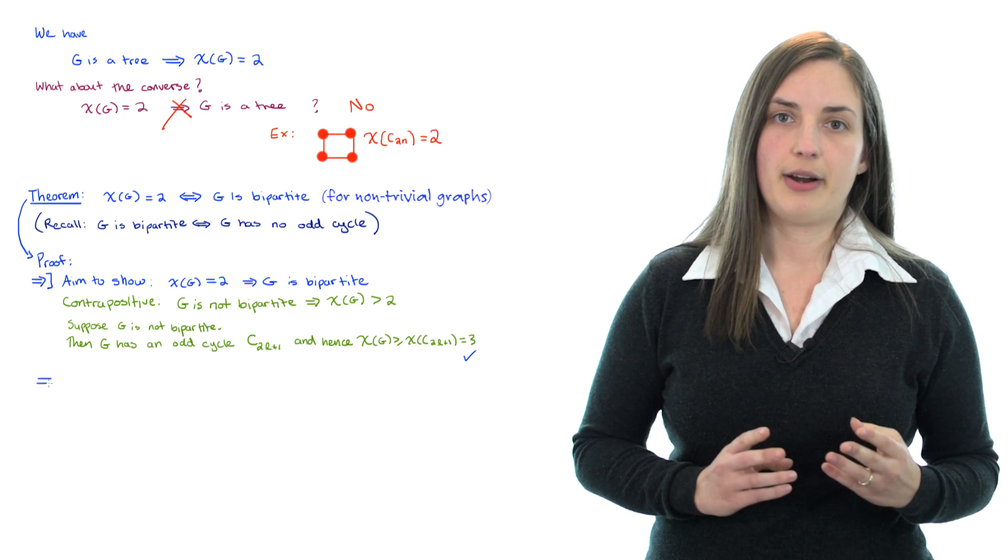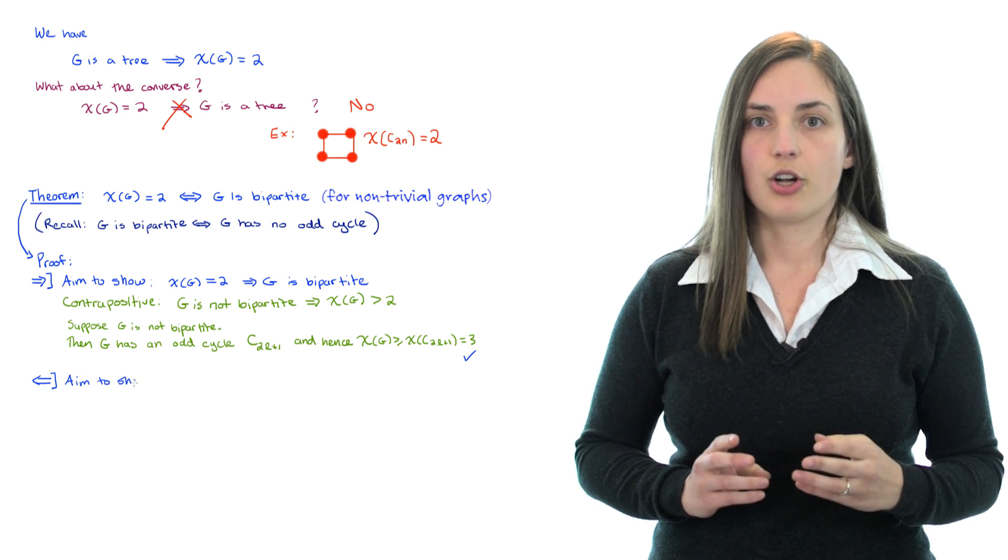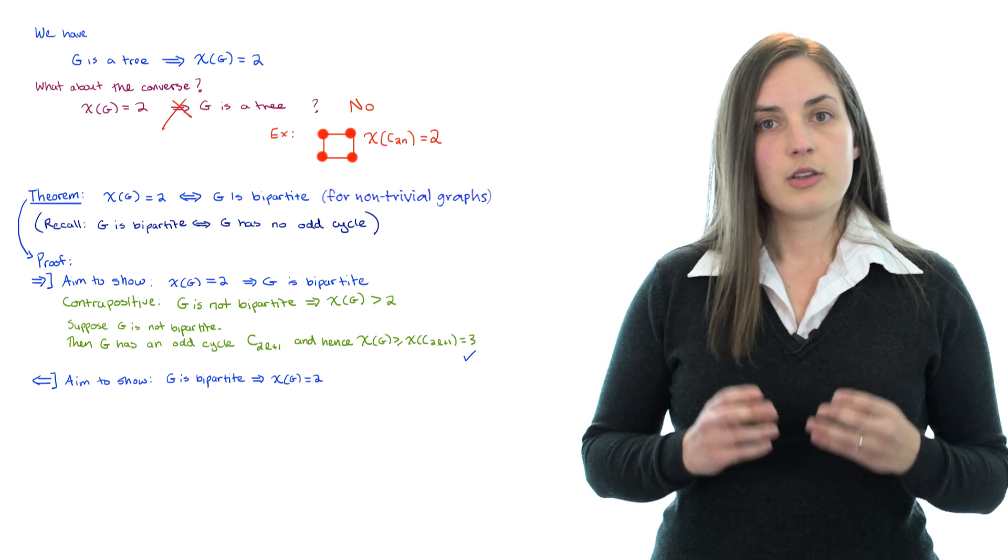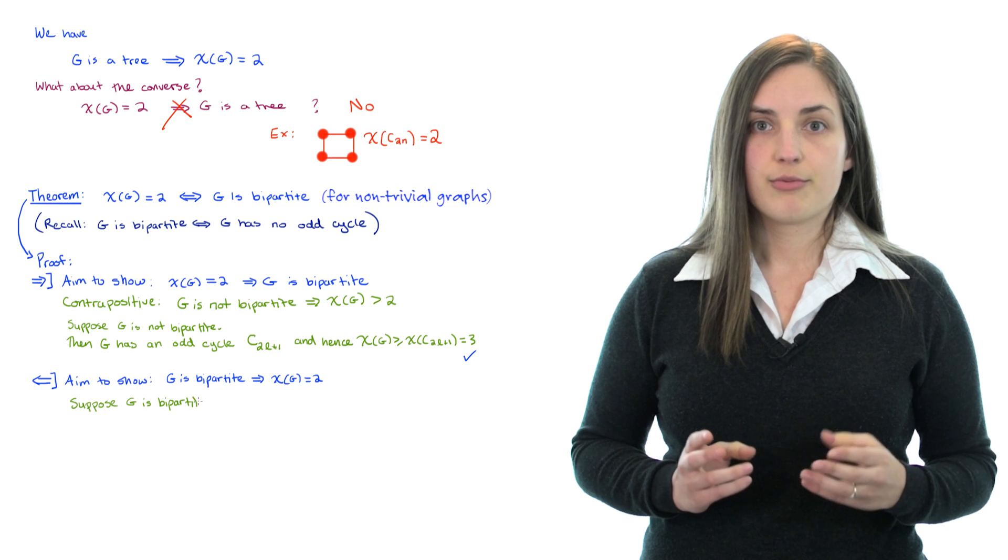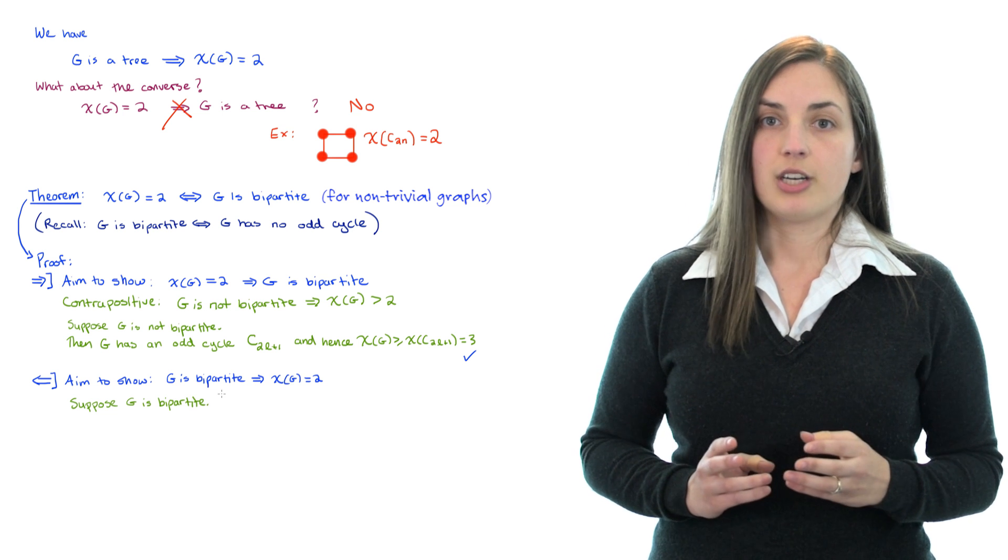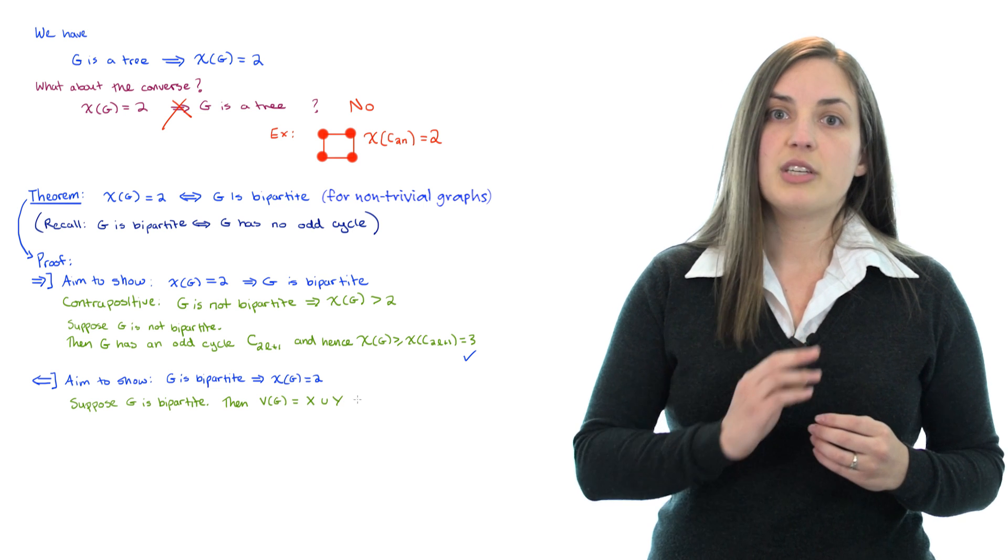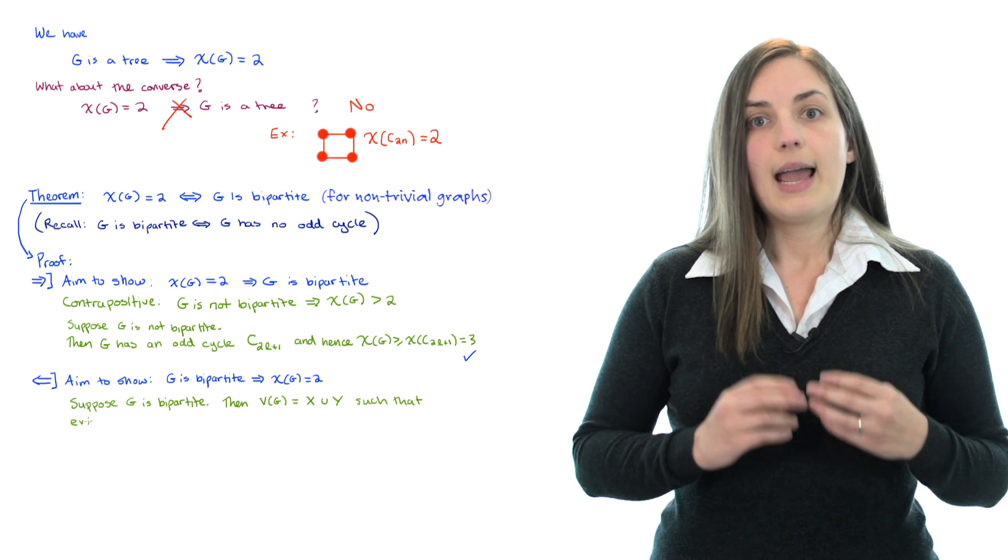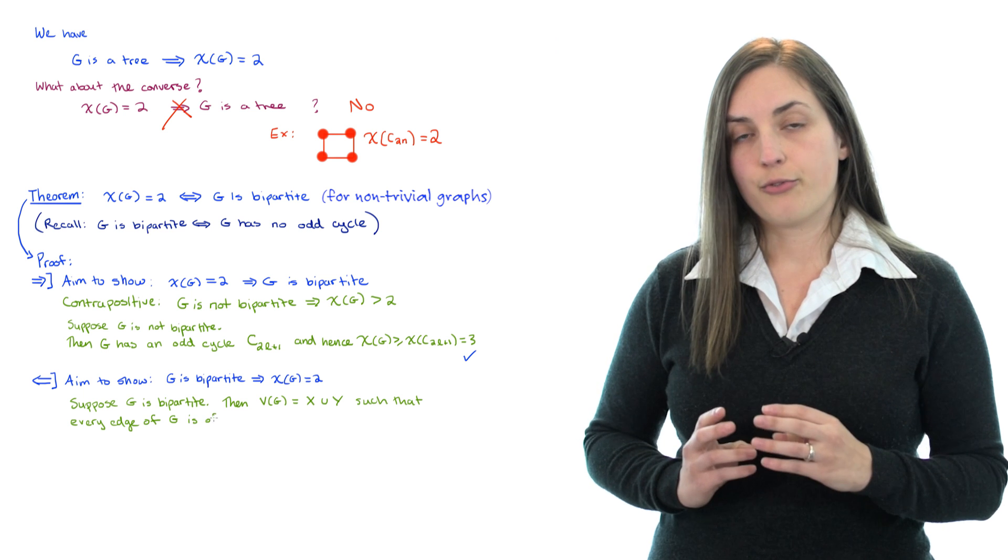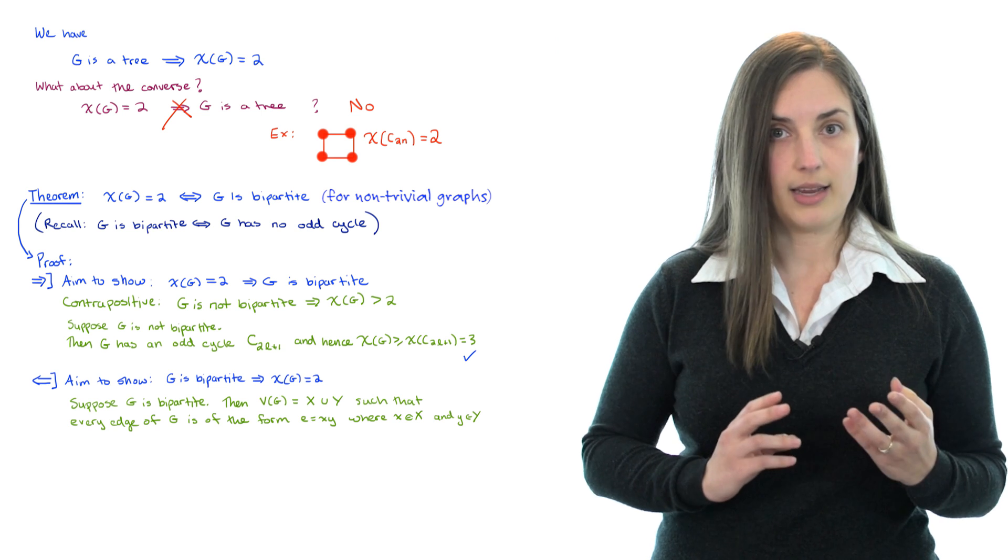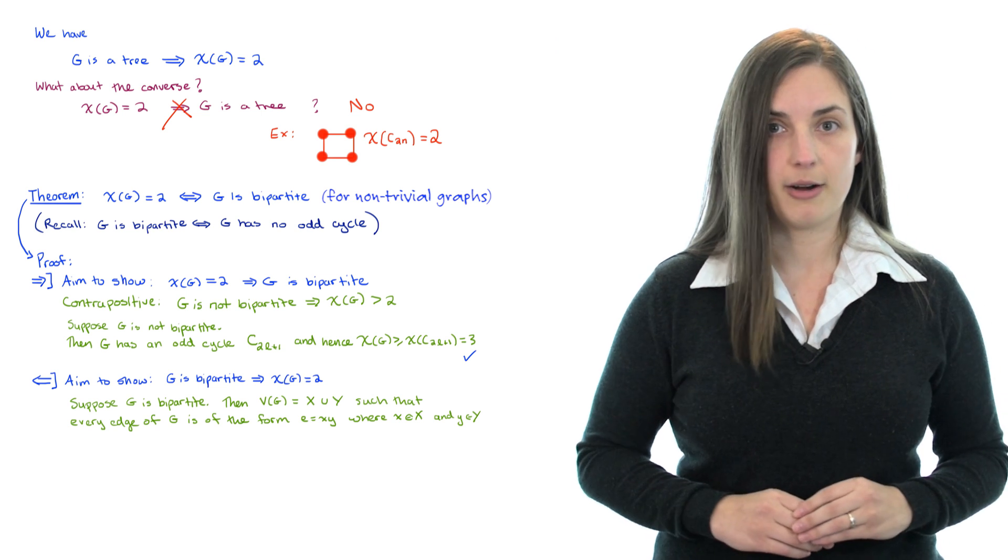Now let's look at the other direction. Here we aim to show that if a graph is bipartite, then the chromatic number is equal to 2. So let's take a bipartite graph, but then we know by definition that we can write down its vertex set as X union Y, where every edge in the graph is of the form XY where X belongs to the set X and Y belongs to the set Y. That's just the definition of being bipartite.